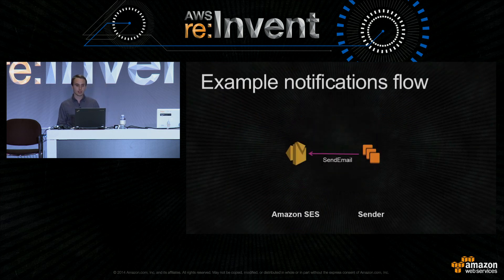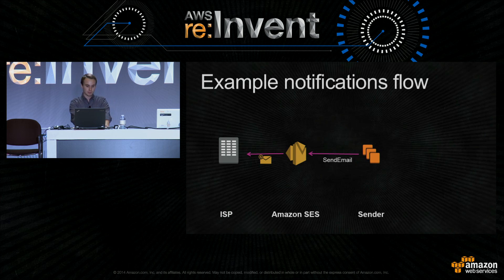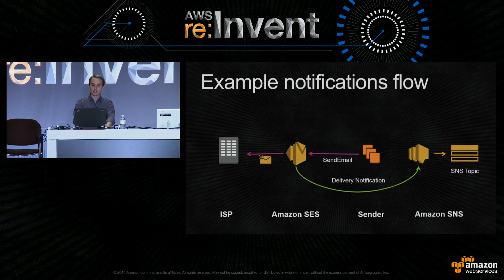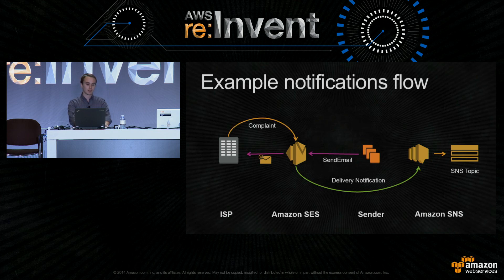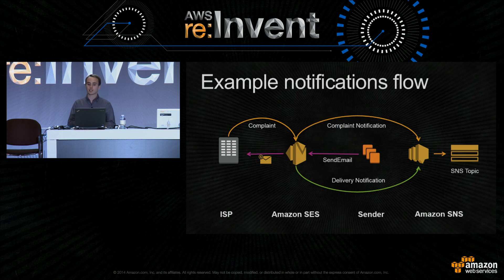Let's take a look at how these notifications commonly flow. Here's an SES customer making a send email API request. SES will deliver the email on behalf of the customer. Upon successful delivery, SES will issue a delivery notification to an SNS topic of the customer's choice. If the recipient marks the message as spam, SES will receive a complaint from the ISP and forward it as a complaint notification to the SNS topic of the customer's choice — either the same topic used for other notification types or a separate one.